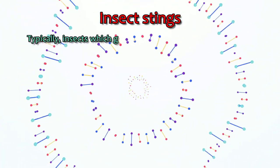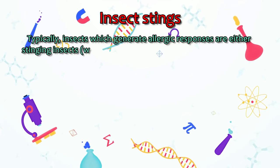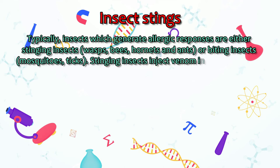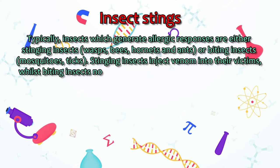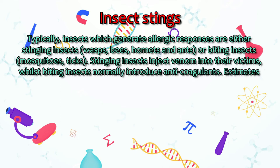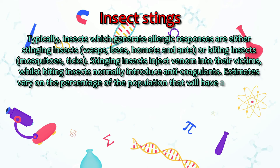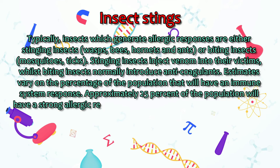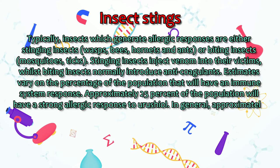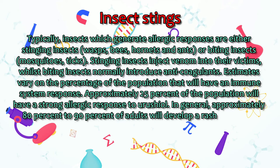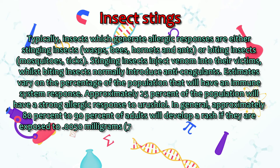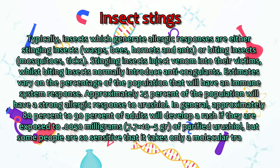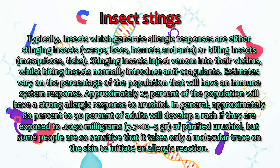Insects that generate allergic responses are either stinging insects — wasps, bees, hornets, and ants — or biting insects such as mosquitoes and ticks. Stinging insects inject venom into their victims, whilst biting insects normally introduce anticoagulants. Approximately 25% of the population will have a strong allergic response to urushiol. Approximately 80–90% of adults will develop a rash if exposed to 0.0050 milligrams of purified urushiol, but some people are so sensitive that it takes only a molecular trace on the skin to initiate an allergic reaction.